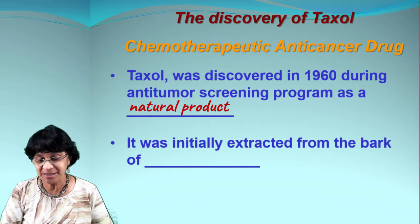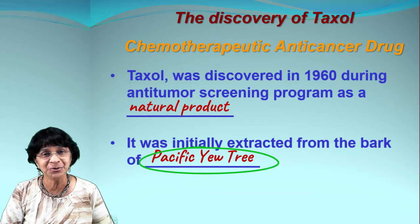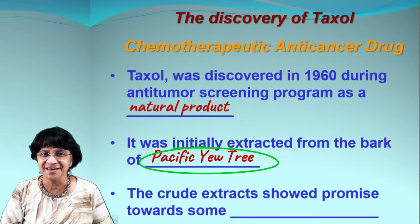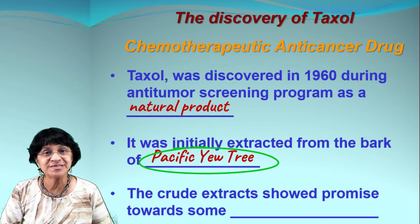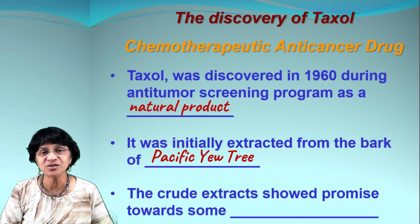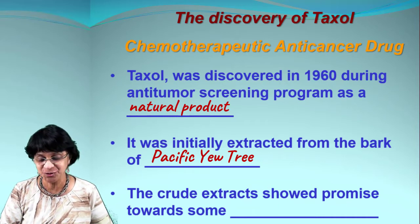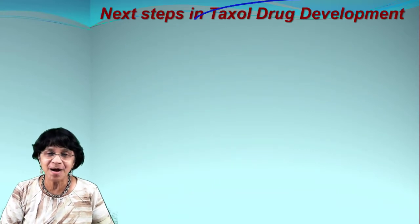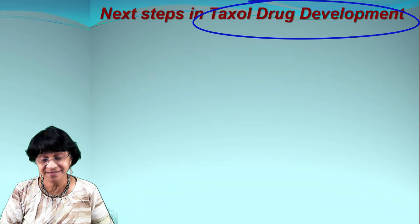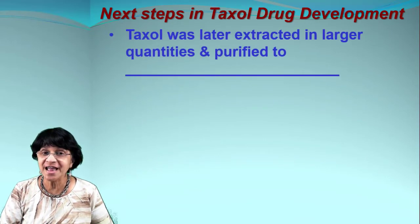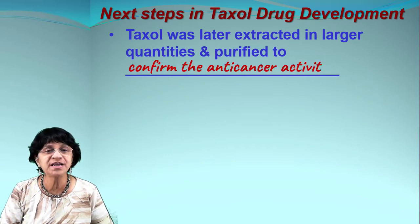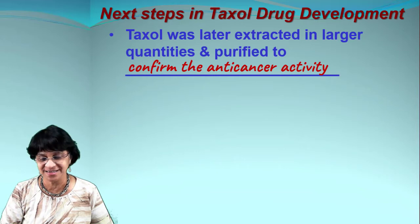Taxol was obtained from the bark of the Pacific yew tree. The extracts were checked to see how they work and showed promise toward cancer treatment. Next steps involved isolating taxol in larger quantities and purifying it to confirm its anti-cancer activities.